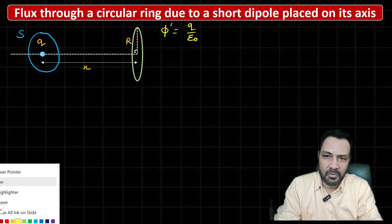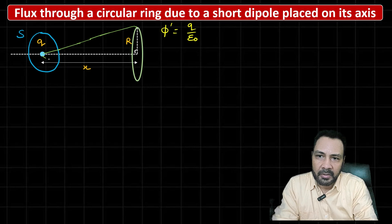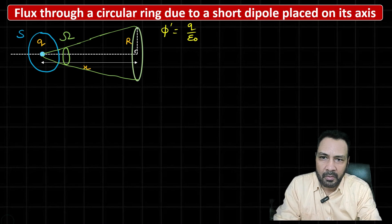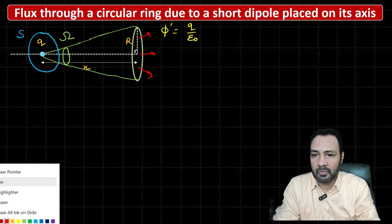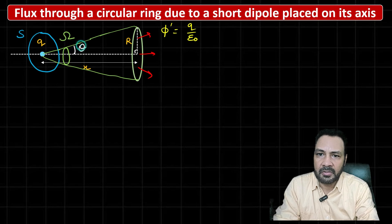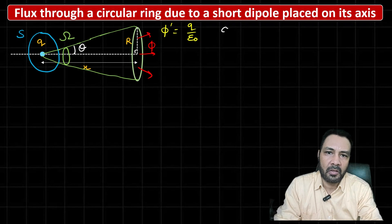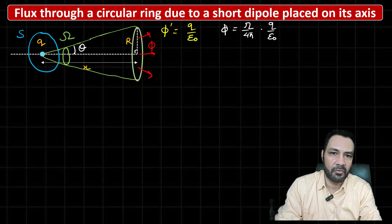Out of the 4π solid angle, the flux crossing through the ring would be limited to some solid angle ω. If I draw lines from the charge to the ends of the ring, this defines a solid angle ω, and the flux crossing through the ring is limited to only those field lines within this solid angle ω. Suppose this half-angle is θ. The distribution of field lines per unit solid angle is uniform, so the flux crossing through the ring is φ = (ω / 4π) · (q / ε₀).